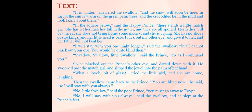'I will stay with you one night longer,' said the swallow, 'but I cannot pluck out your eye — you would be quite blind then.' 'Swallow, swallow, little swallow, do as I command you.' So he plucked out the prince's other eye and darted down with it. He swooped past the match girl and slipped the jewel into the palm of her hand. 'What a lovely bit of glass!' cried the little girl, and she ran home laughing. Then the swallow came back to the prince. 'You are blind now,' he said, 'so I will stay with you always.' 'No, little swallow, you must go away to Egypt.' 'No, I will stay with you always,' said the swallow, and he slept at the prince's feet.